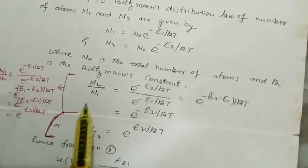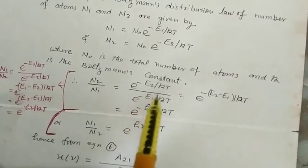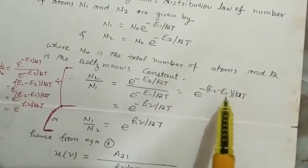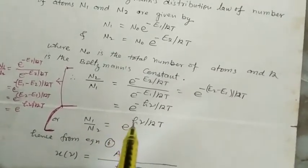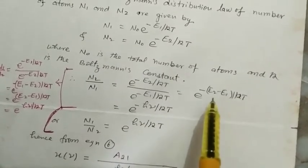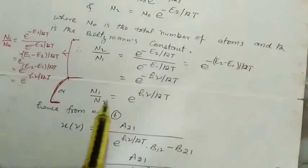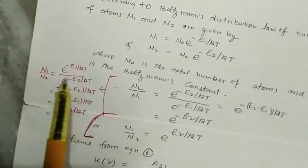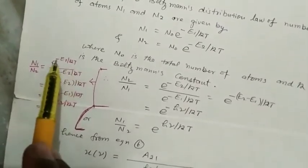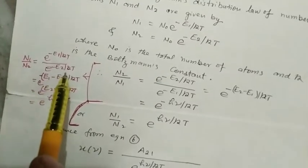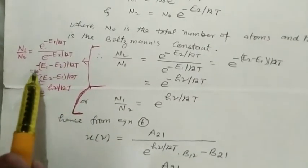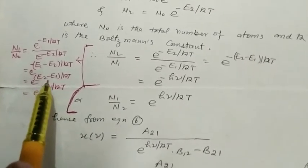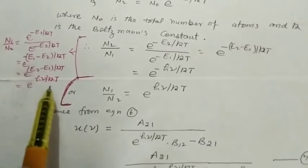From here, N2/N1 = e^(-E2/kT)/e^(-E1/kT) = e^(-(E2-E1)/kT) = e^(-hν/kT). Therefore, N1/N2 = e^((E1-E2)/kT) = e^(hν/kT).